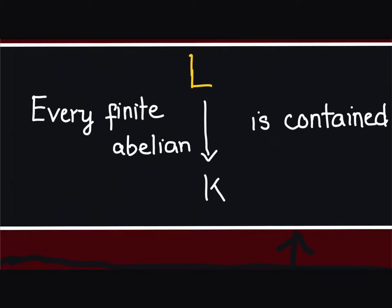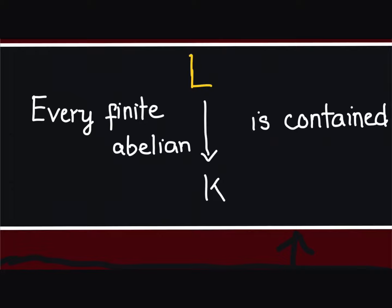This proves that every finite abelian extension of k lies inside some ray-class field, and thus concludes our generalization of Kronecker-Weber.